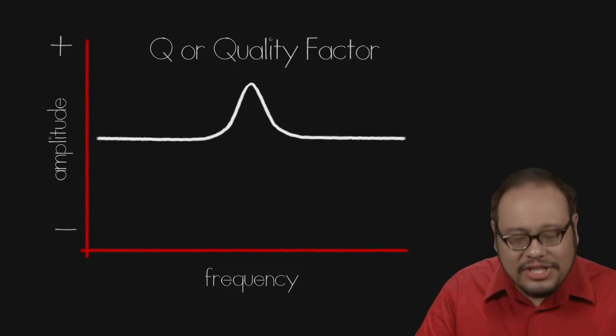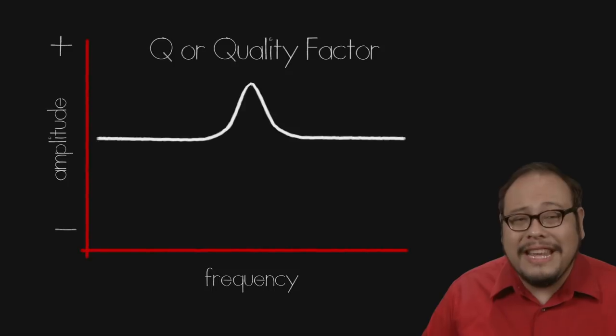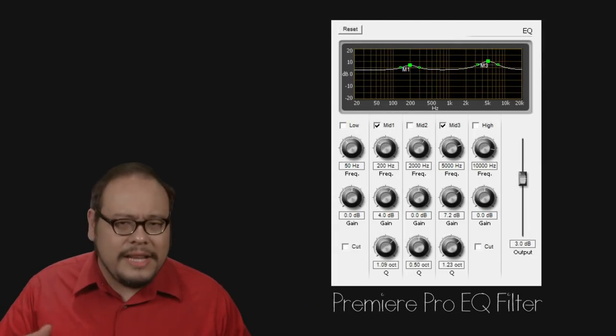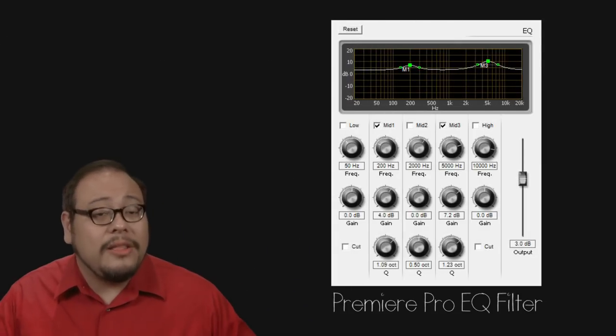High Q values will have a steeper slope. Sometimes Q is expressed in octaves. The more octaves a Q has, the wider and gentler the effect.